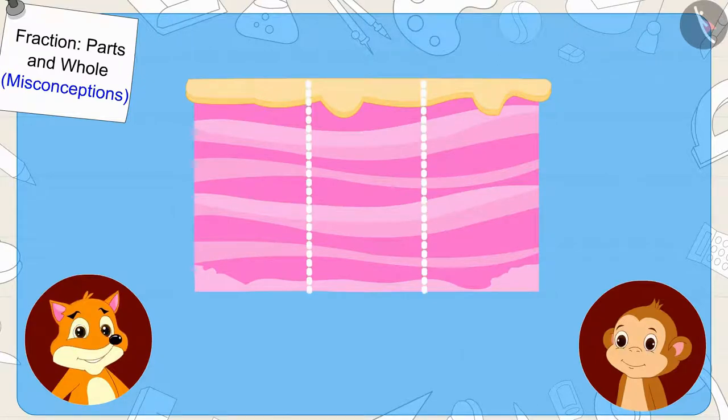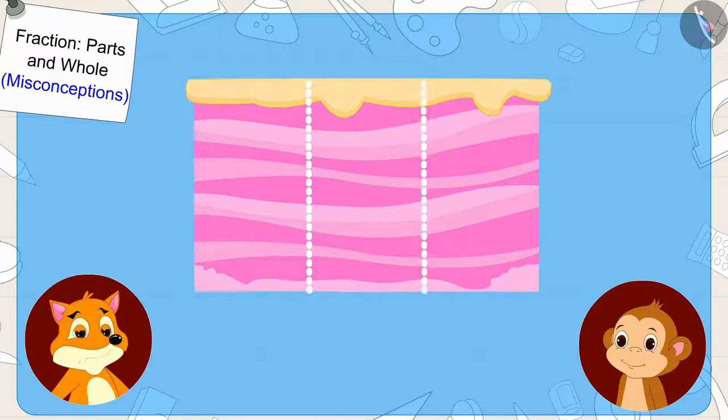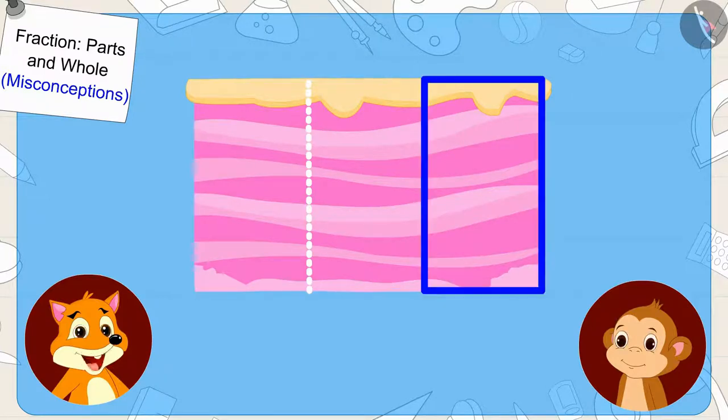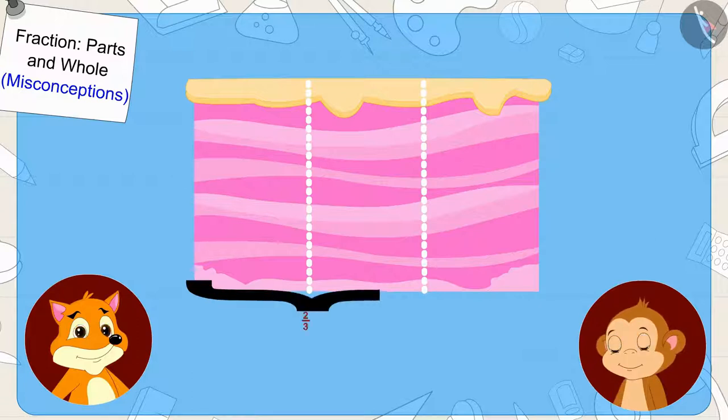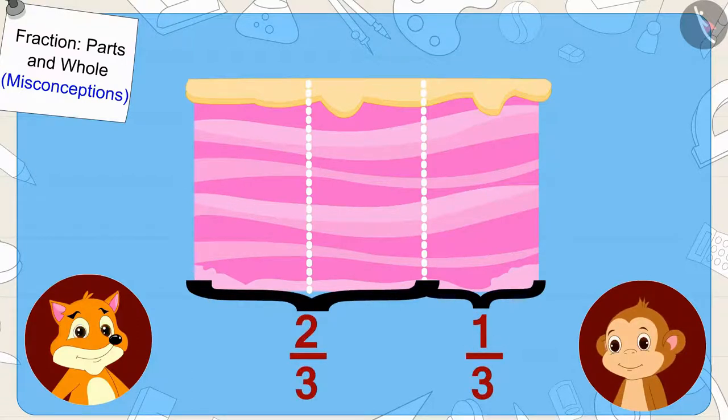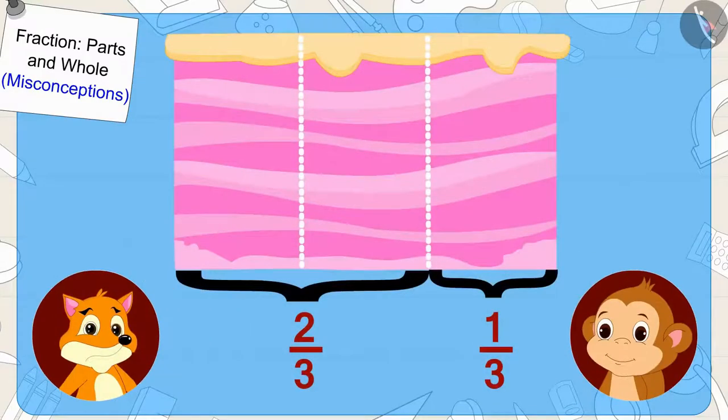The fox split the cake into three equal parts in this way. The fox told Babban that she would eat two-thirds of the cake, and Babban will eat one-third portion of the cake. When Babban could not understand, the fox wrote it in the form of a fraction. Children, the fox has divided the cake into three equal parts. But, are they both getting equal amount of cake?